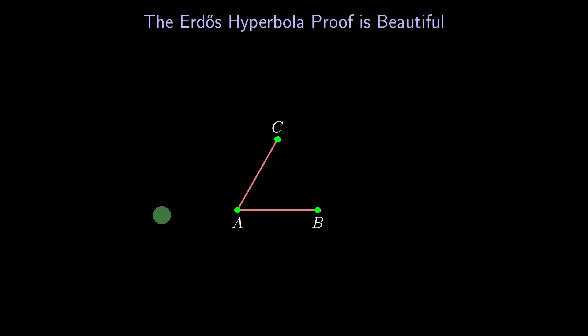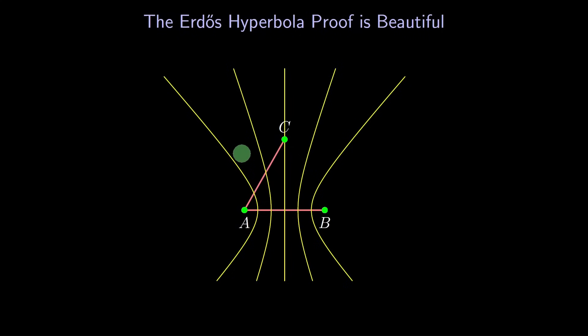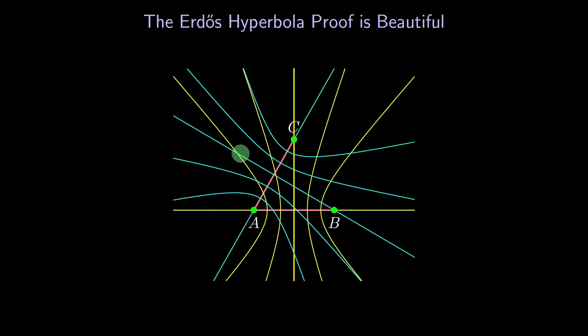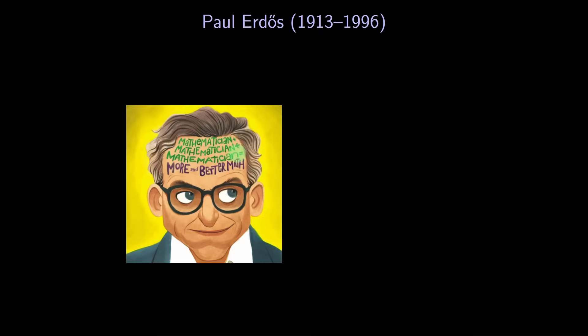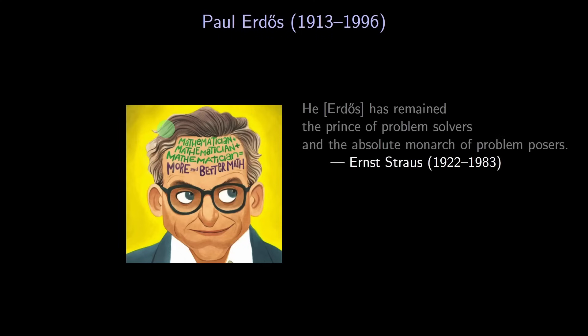In my opinion, Erdős's proof is beautiful. His clever idea of using hyperbolas makes the proof so clear. As I mentioned at the beginning, I knew Erdős while he was alive. He was constantly working with other mathematicians, proving results with them, and asking them new questions. Ernst Strauss worked with both Albert Einstein and Paul Erdős, and Strauss had this to say about Erdős: He has remained the prince of problem solvers and the absolute monarch of problem posers. I hope you enjoyed this perfectly polished proof from the prince of problem solvers. Thanks for watching, and I'll see you in the next one.